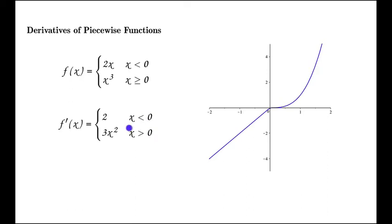But the interesting part, and the issue is, what happens at x equals 0. Notice that I've left x equals 0, or any definition for what f prime of 0 is, out of the description of f prime, out of the rule for f prime.